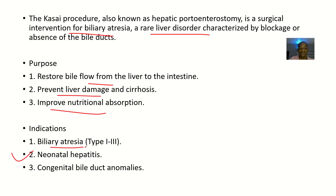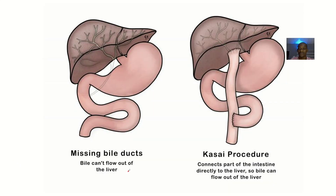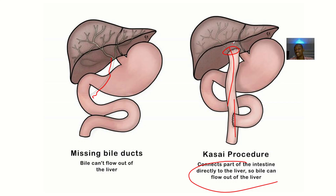Indications: if a patient has biliary atresia, you may want to do this surgery. If there's neonatal hepatitis, you might want to do this surgery. There are also congenital bile duct anomalies — this is the gold standard for repairing them. Since the purpose of the bile duct is just to transport bile from the liver to the intestine, you connect a part of the intestine directly to the liver so that bile can flow out.